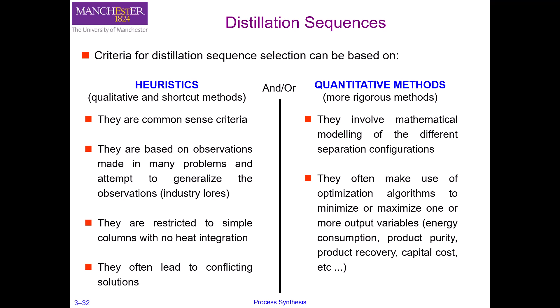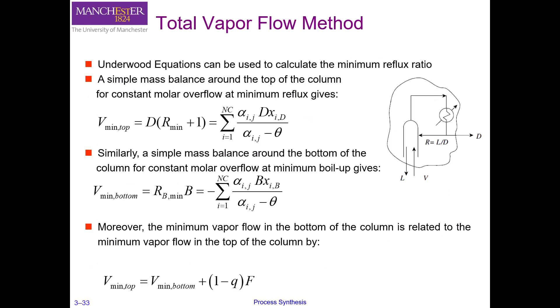Having introduced the basic shortcut design equations for multi-component distillation, we can move on to our actual topic: looking at a quantitative method to evaluate the performance of a sequencing of distillation columns. We have seen how we can use the equations of Fenske, Underwood, and Gilliland to calculate different variables in a multi-component distillation, and we can also use those equations to calculate the total vapor flow through a distillation column.